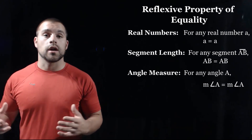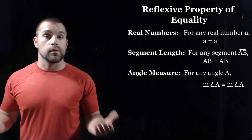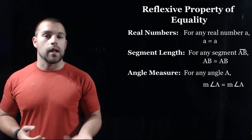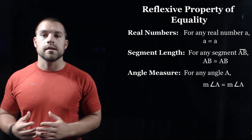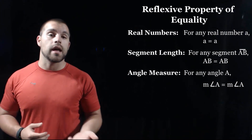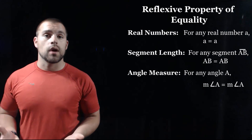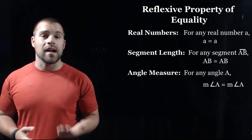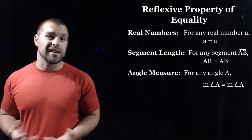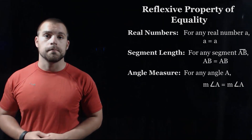If we're talking about the length of a segment, let's say we've got segment AB, then the length of AB is equal to the length of AB — it's equal to itself. Same thing for angles: if we've got angle A, then the measure of angle A is equal to itself, or the measure of angle A.